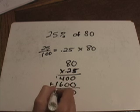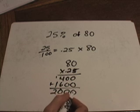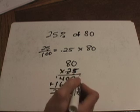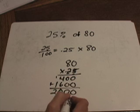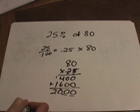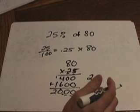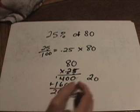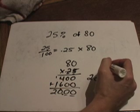We carry and get 2000, but we have two numbers past the decimal point in the problem, so we need two numbers past the decimal point in the answer. The answer becomes twenty. Now there is an easier way to solve this than doing all this work.